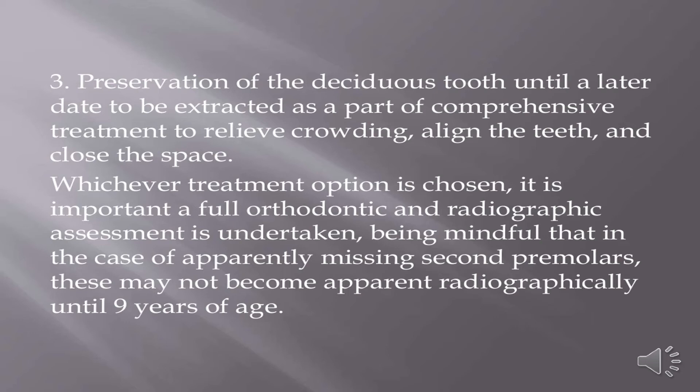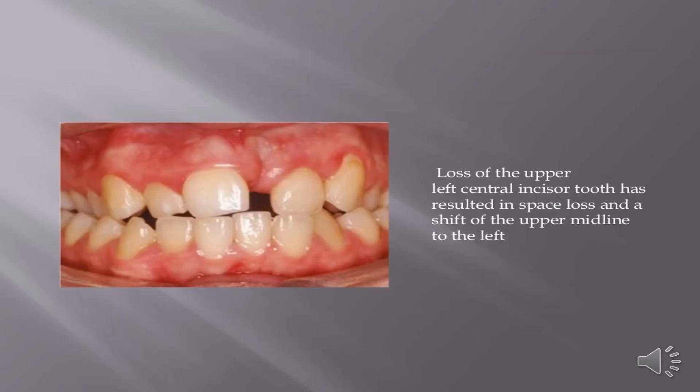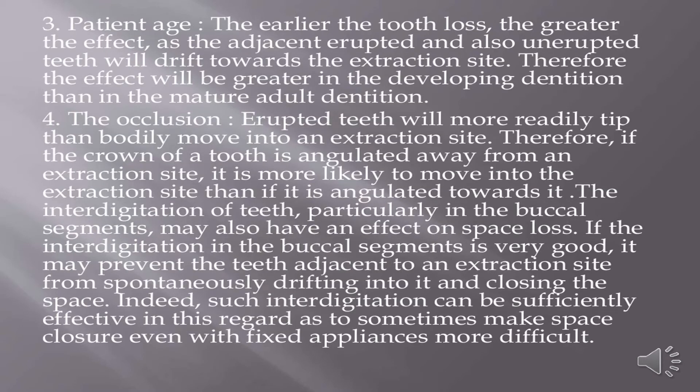The effect of loss of a permanent tooth depends on several factors. First, the presence or absence of crowding: loss has a greater effect within the same arch when crowding is present, promoting drifting of adjacent teeth into the extraction site. Second, the position of the tooth within the arch: the more anterior the tooth loss, the greater the effect on the midline, while loss of a second permanent molar has minimal effect. Conversely, loss of a posterior tooth has a greater effect on the buccal segment relationship than loss of an incisor. Third, patient age: the earlier the tooth loss, the greater the effect, as adjacent erupted and unerupted teeth will drift toward the extraction site — the effect is greater in the developing dentition than in the mature adult dentition.